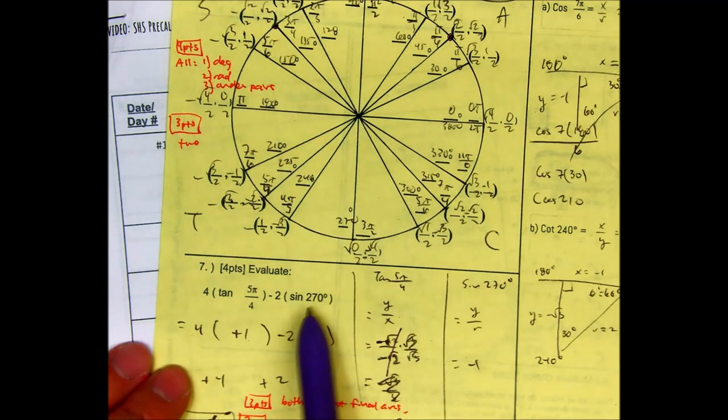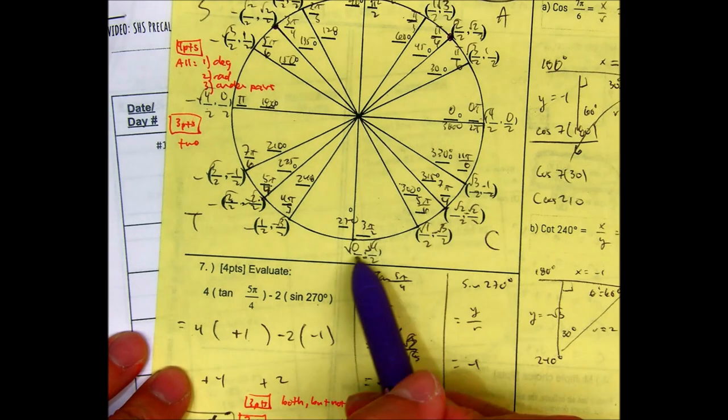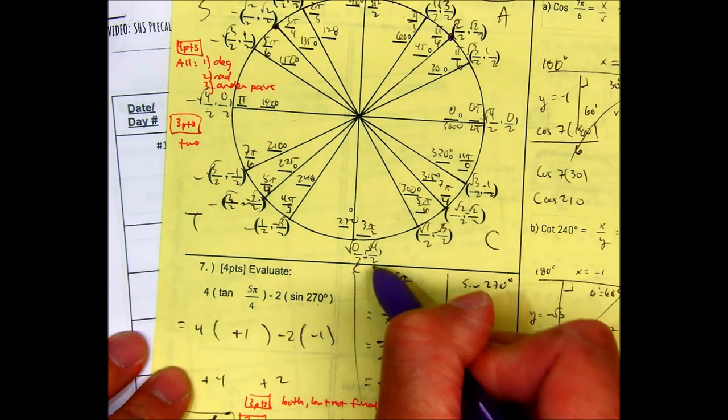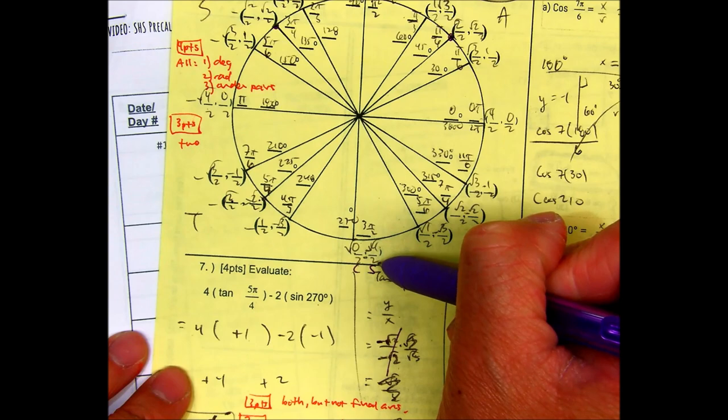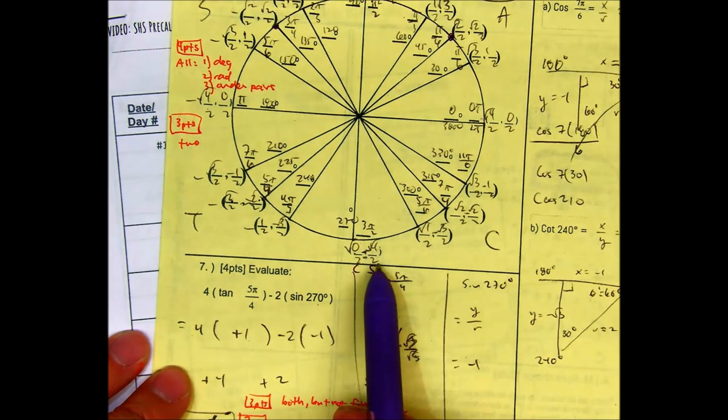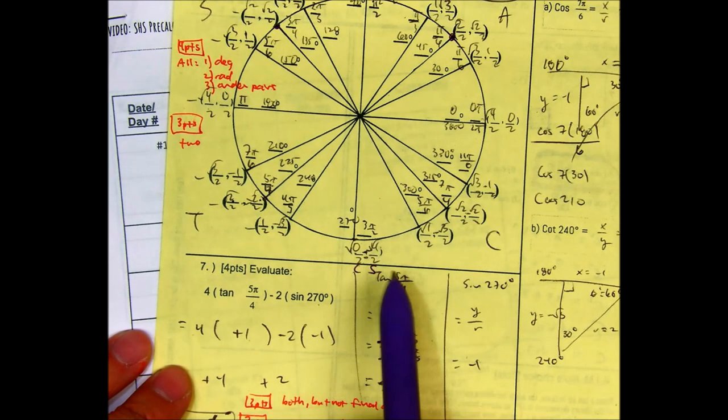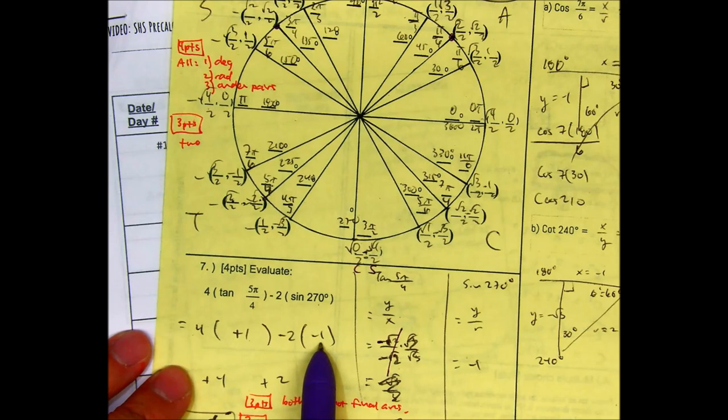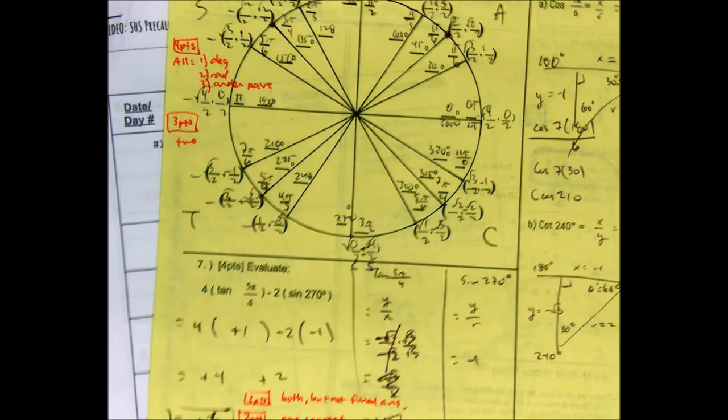Define sine at 270. 0, 90, 180, 270. Sine is the second order pair. So here radical 4 divided by 2. Radical 4 is 2. And 2 divided by 2 is 1. And this is a negative. So the order pair here is 0, negative 1. So my answer is negative 1. Negative 2 times negative 1 is positive 2. And 4 plus 2 is 6. Your answer is 6.